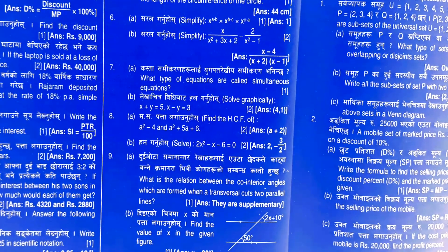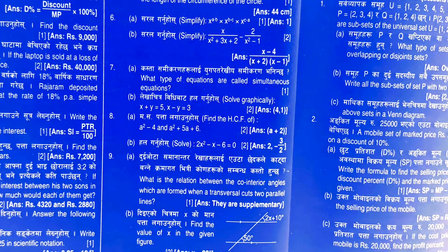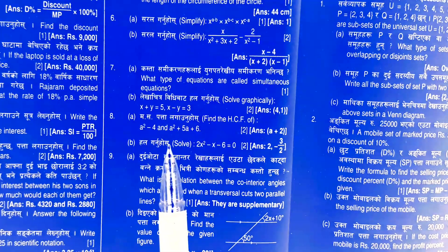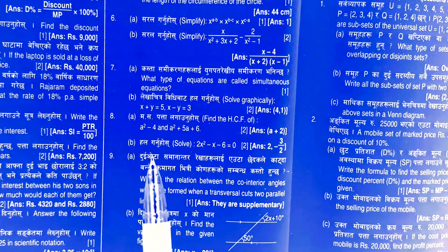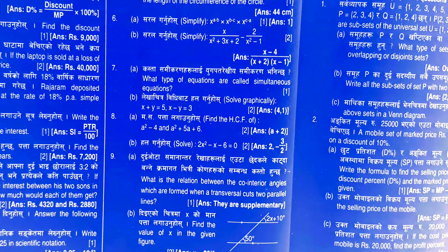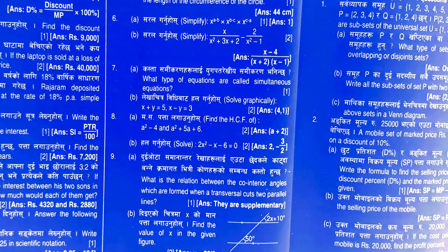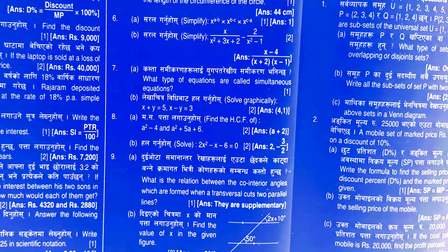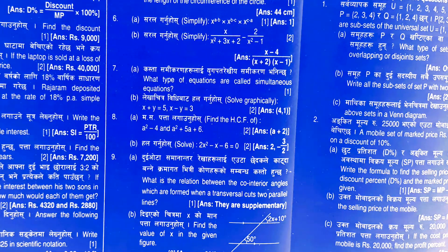I will show you the 8 numbers and the question. A square minus 4 and a square plus 5, and a plus 6. The b number is 8 and the whole number is 2x squared minus x minus 6 is equal to 0.